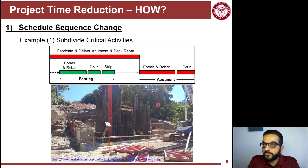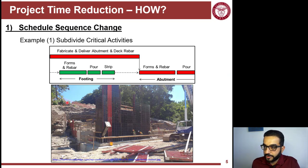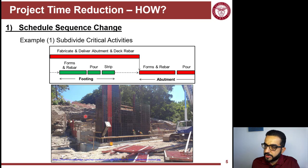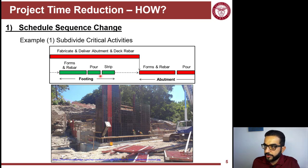The first approach is changing the schedule sequence. Consider this abutment example: you have a channel with a bridge or road on top, and you're building an abutment with a footing. Once the footing formwork, rebar, concrete pour, and formwork stripping are done, you work on the abutment wall itself. You fabricate and deliver the abutment deck rebar — that's the off-site work that happens before forming the abutment and installing the rebar as one activity.